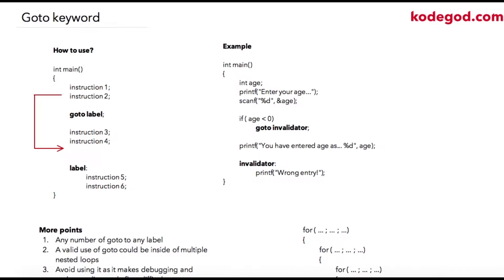In this lecture we are going to learn about the goto keyword. Here's the syntax for how to use the goto keyword. Suppose we have some instructions in your program — goto is a keyword which instructs the compiler to take program control to a particular label. Wherever we define a label, all the instructions coming after your label will be executed, and the whole code block before it will be skipped.